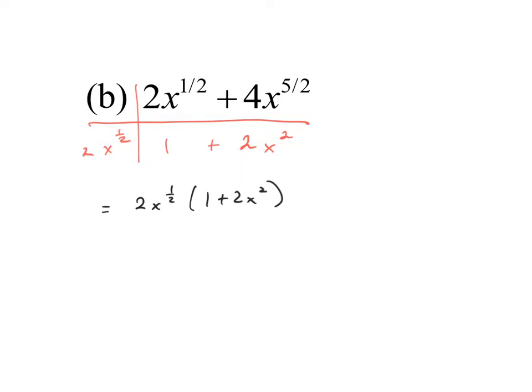We have to continue to check if there's anything else we can do. The second term is a square, but the 2 is not a perfect square, and it's an addition, so this does not factor any further. Please review all of your factoring rules if you need practice. The final factored form is 2x to the one half times 1 plus 2x squared. Throughout the semester, this will be just one small part of a larger problem, so make sure you know how to factor and simplify.